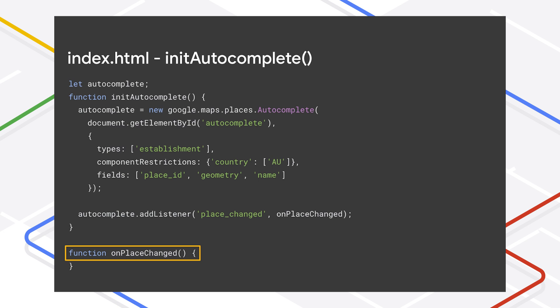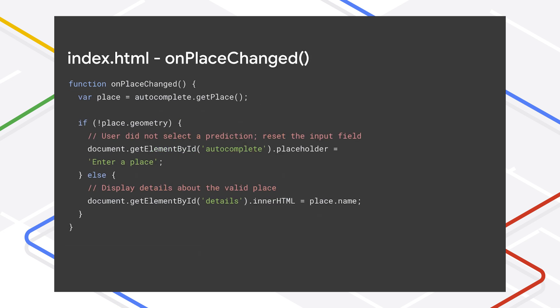In this example, we call the function onPlaceChanged, but you can name your function whatever you want. The first thing you want to do in your function after a user selects a prediction is to get information about the place that was selected. Do this by calling getPlace on the autocomplete service.